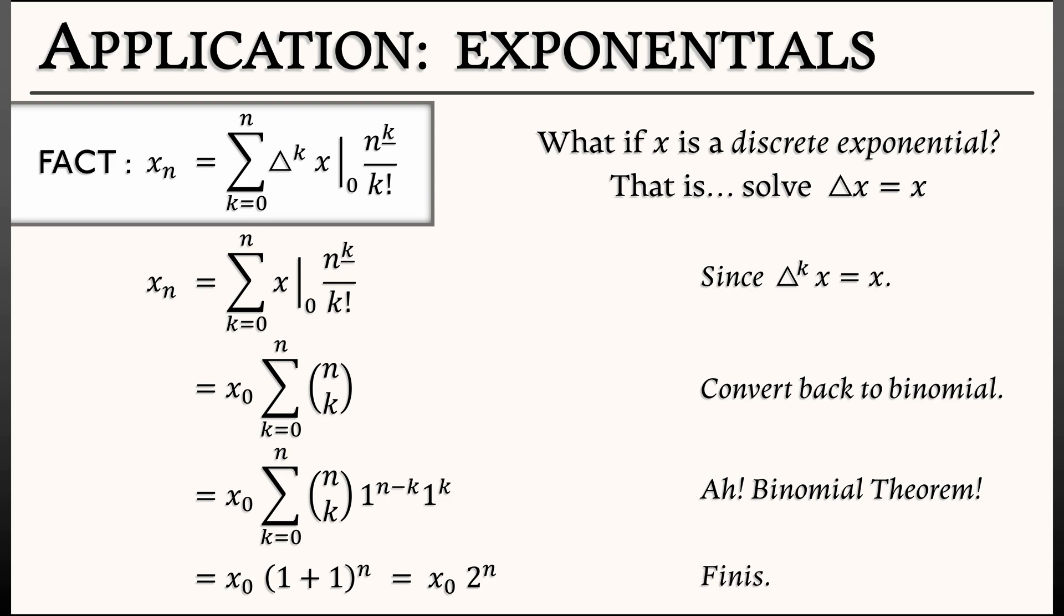That is the solution to this discrete differential equation. Any discrete function that is its own forward difference is really the initial condition times 2 to the n.